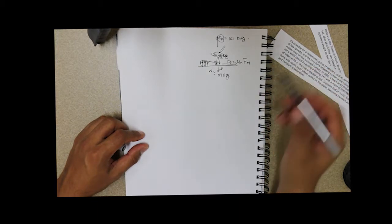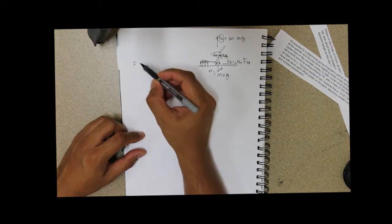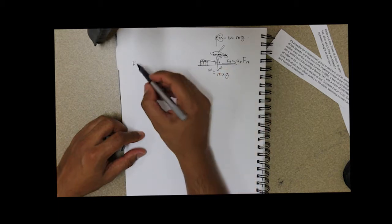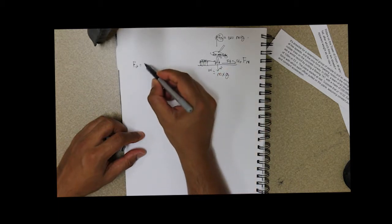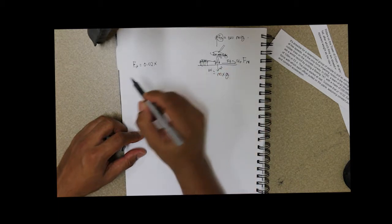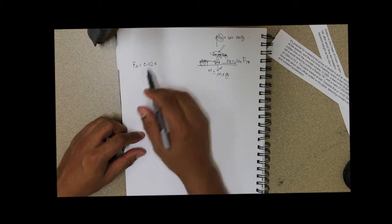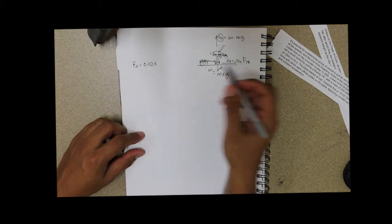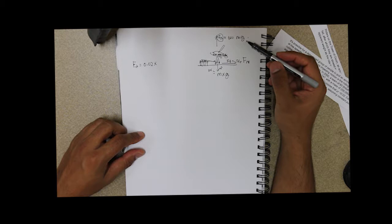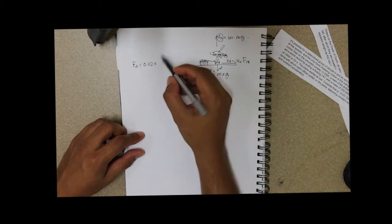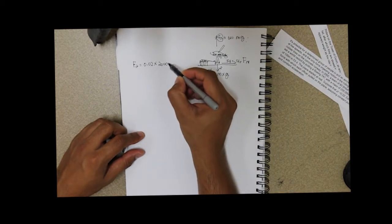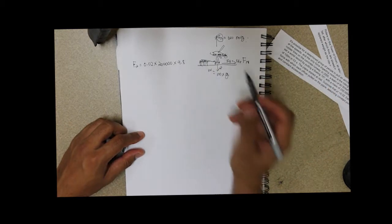So our friction force, which the officers have to overcome, will be equal to 0.02, which is the coefficient of rolling friction given to us, times our force normal, which is just the weight of the plane. That's 200,000 kilograms times 9.8 meters per second squared.